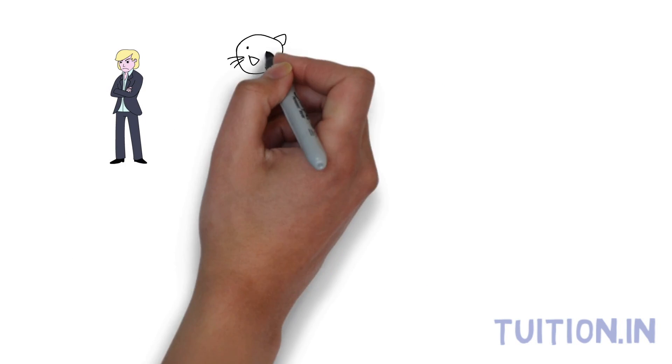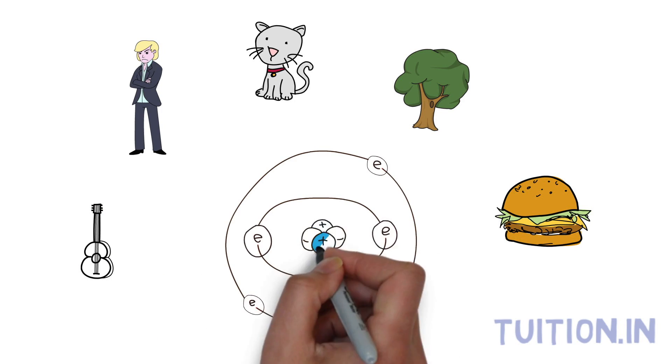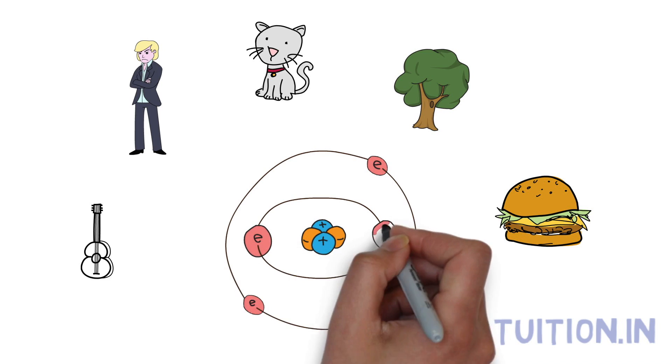All matter is made up of elements that cannot be broken down by chemical activity. Atom is the smallest particle of an element that retains the element's properties.